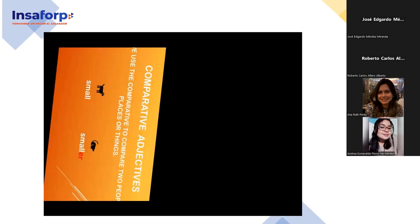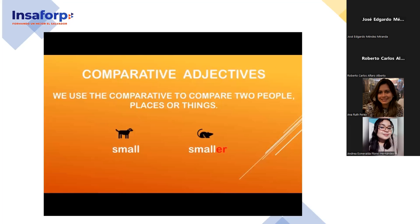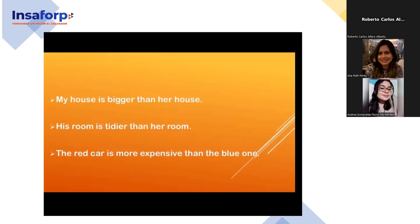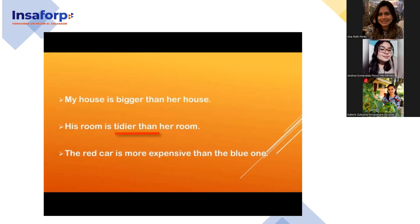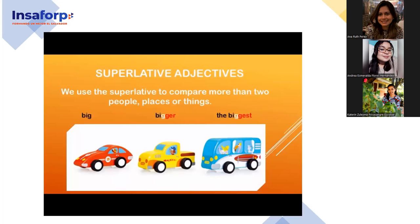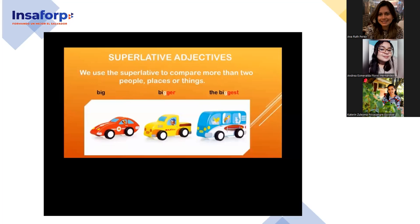Let's review comparative adjectives. We use comparative adjectives to compare two people, places, or things. They are used in sentences where two nouns are compared in this pattern: noun or subject + verb + comparative adjective + 'than' + noun or object. Superlative adjectives are used to describe an object which is at the upper or lower limit of equality, where a subject is compared to a group of objects.